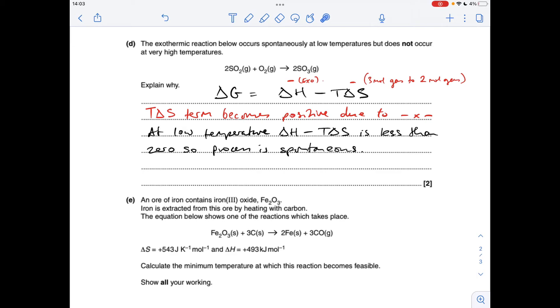So if we think about the low temperature, ΔH - TΔS is going to be less than zero because this term here is going to be small. So you've got a negative ΔH combining with a small positive. So this will stay negative, less than zero, so the process is spontaneous.